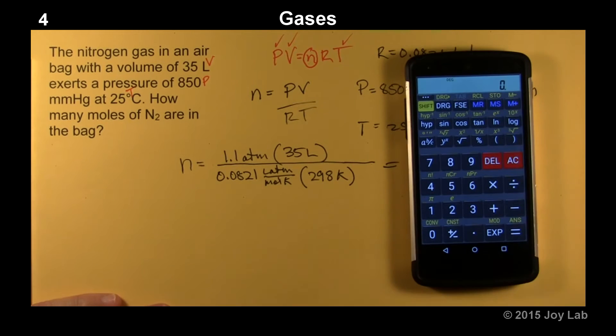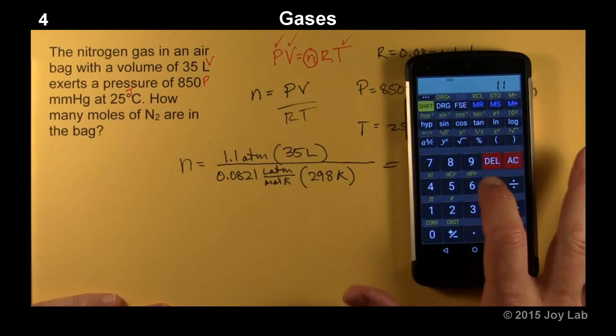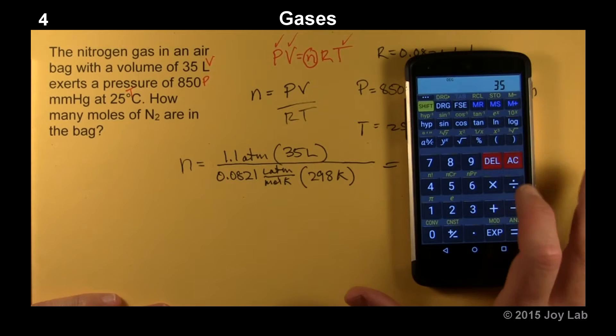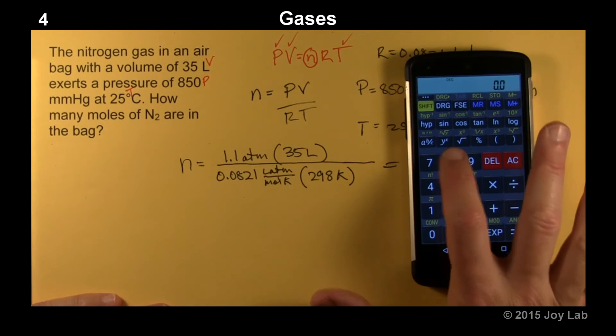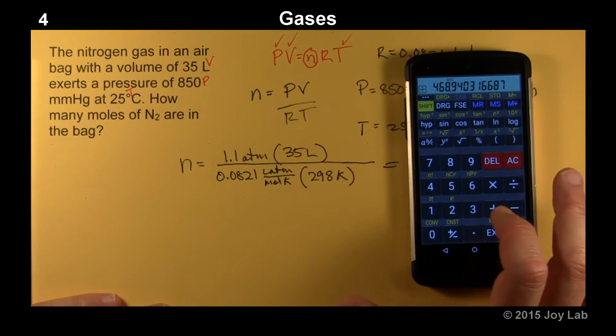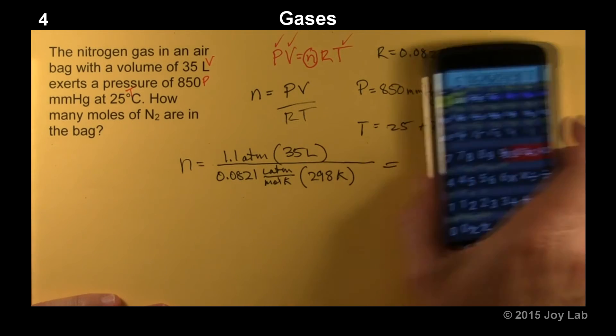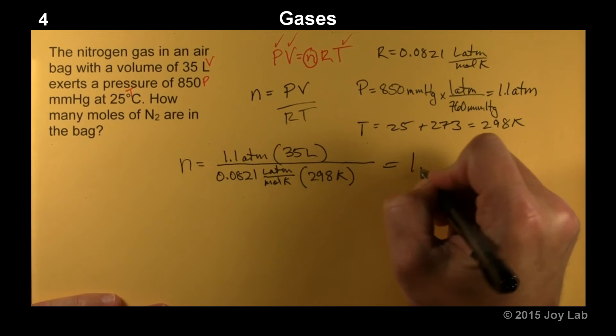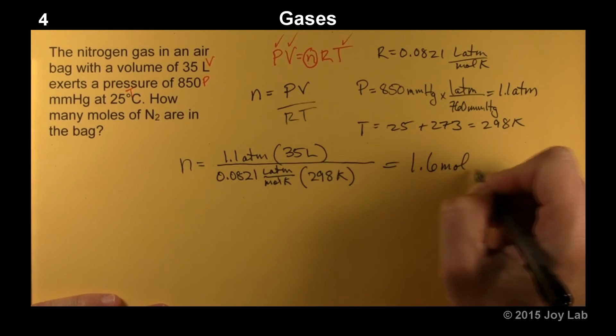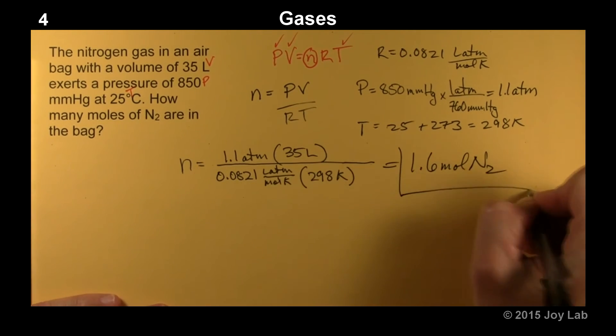We have 1.1 times 35 divided by 0.0821 divided by 298. 1.57. We're good to 3 sig figs, 2 sig figs, so 1.6. That's 1.6 moles of mercury.